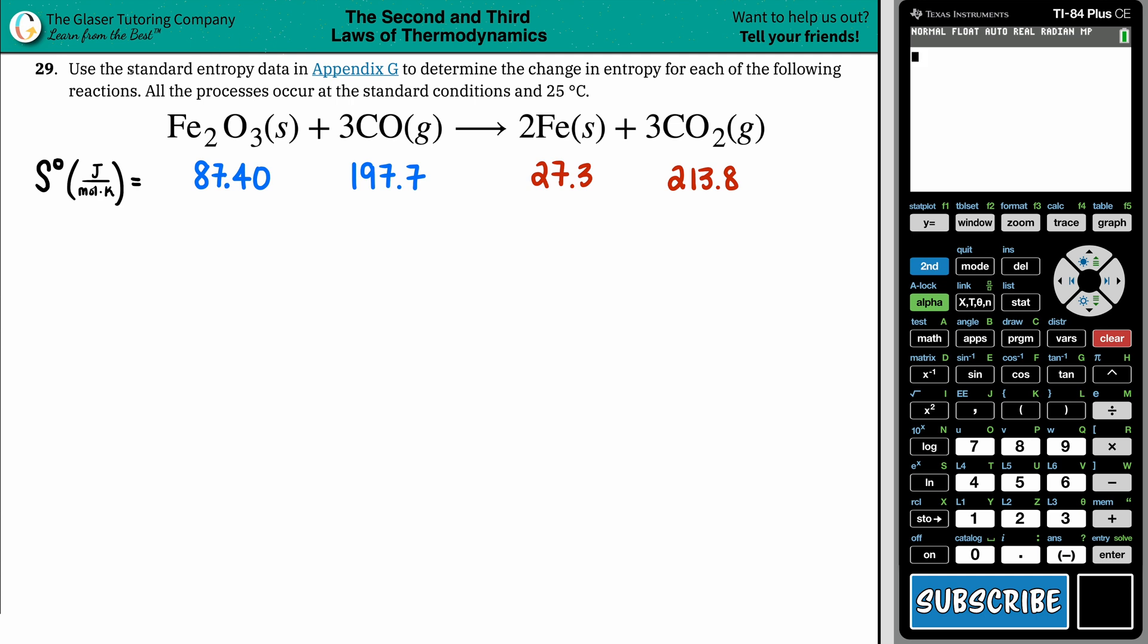Number 29. Use the standard entropy data in Appendix G to determine the change in entropy for each of the following reactions, all the processes occur at the standard conditions and at 25 degrees Celsius.